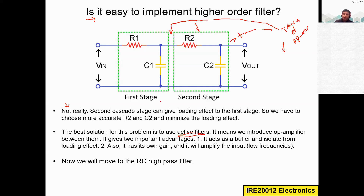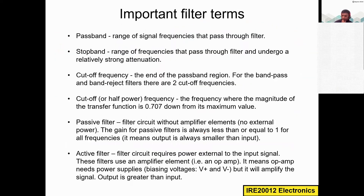Placing the operational amplifier as a voltage follower between the two circuits gives two important advantages. First, it acts as a buffer to isolate from the loading effect. Second, the operational amplifier has its own gain — whatever input signal you apply, the output is amplified. So if you apply one volt, you may get five or six volts at the output, depending on the amplifier gain.